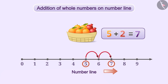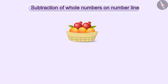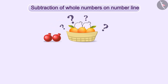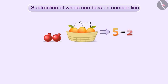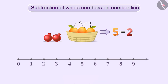Now let us learn how subtraction of whole numbers is represented on the number line. Suppose we remove two fruits from five. Then how many fruits will be left? To find the value of this, we need to subtract two from five. Let's express it on the number line.